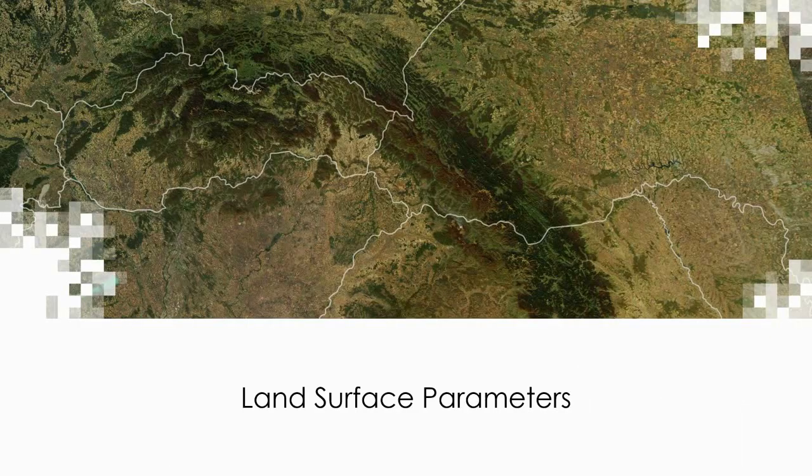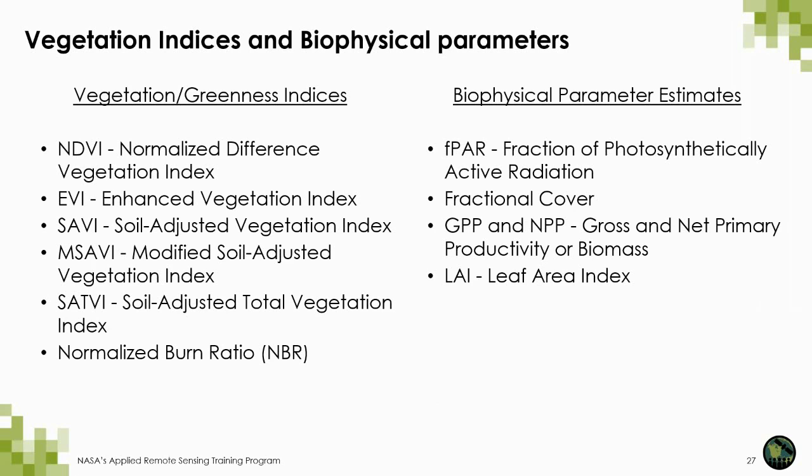That was a brief overview of the satellites and sensors you can use for phenology. Now let's discuss some of the land surface parameters we can obtain from those data. Here I have listed both vegetation indices and biophysical parameters that can be measured and quantified with the satellites and sensors we discussed. The vegetation indices are generally calculated as a ratio of the reflectance values from different portions of the electromagnetic spectrum. Other parameters require ground-based data in conjunction with remote sensing data to generate things like land cover maps. We'll discuss each of these parameters in more detail in the next few slides.